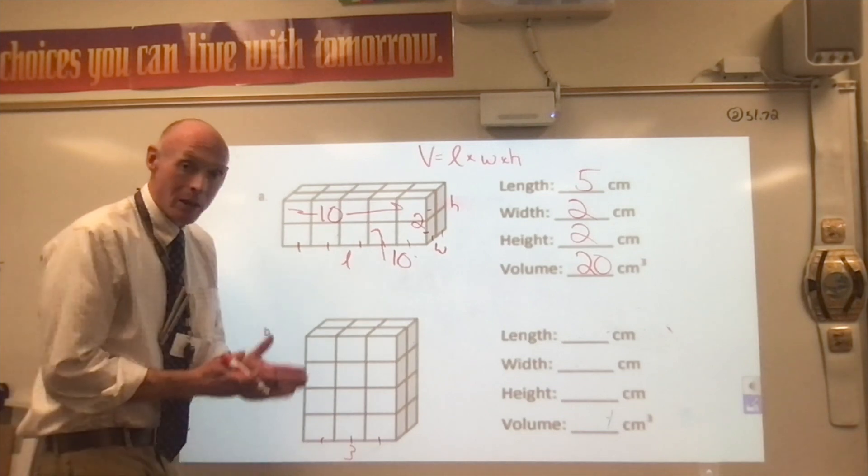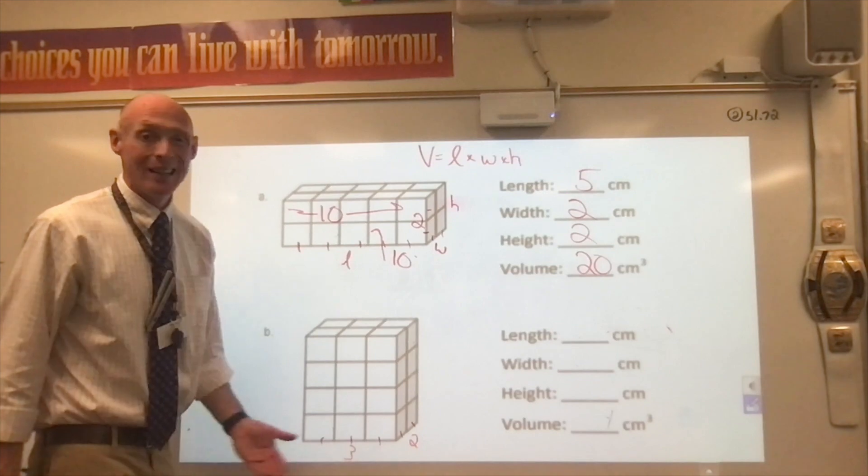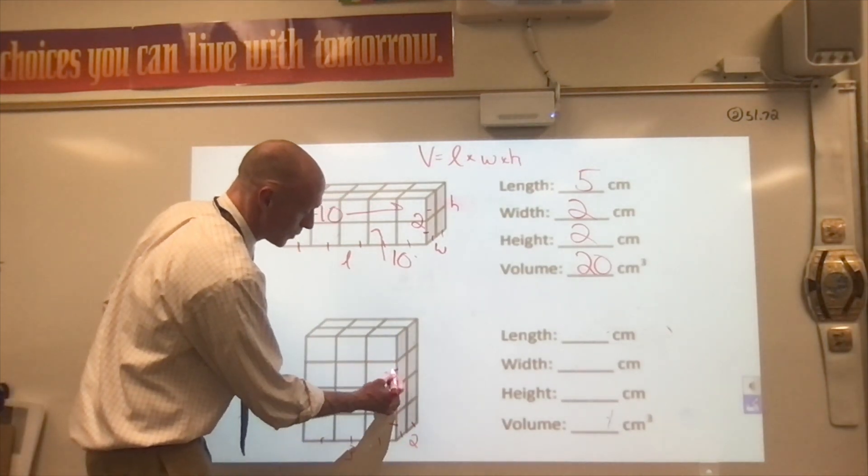Width. How many do we have going back? One, two. Finally, height. How many do we have going up and down? We have one, two, three, four.